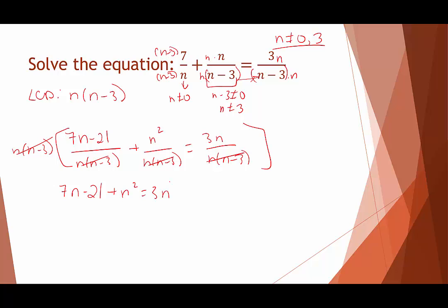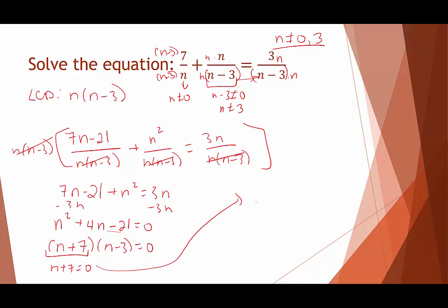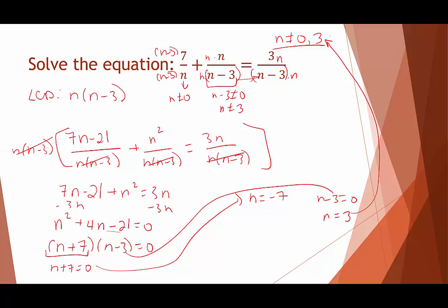This is quadratic, so we set it equal to 0 and rearrange: n squared plus 4n minus 21 equals 0. The target product is negative 21 and sum is 4, factoring to (n plus 7)(n minus 3) equals 0. Setting each factor to 0: n equals negative 7 or n equals 3. But n equals 3 was a restriction on the domain — it gets thrown out as an extraneous solution. The only solution is n equals negative 7.